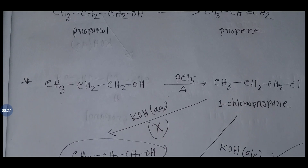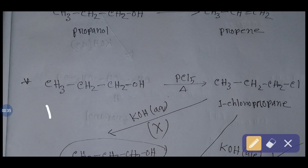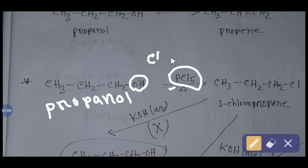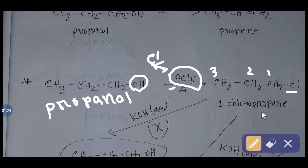This is propanol. If you add phosphorous pentachloride, the OH group of propanol will be replaced by chlorine, which comes from the phosphorous pentachloride. You will get the compound called 1-chloropropane — carbon 1, 2, 3 — 1-chloropropane.